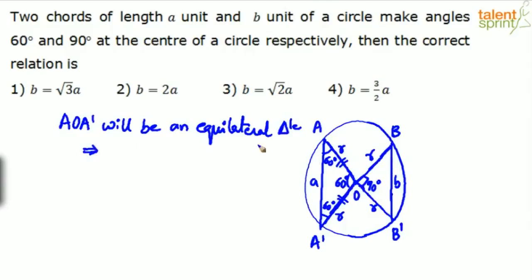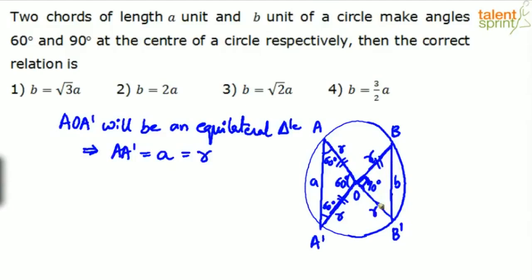Now focus on triangle BOB'. The same argument applies: OB = OB' = r, so two sides are equal. One angle is 90°, and the remaining two angles must sum to 90°. Since the triangle is isosceles, these two base angles are equal, so each is 45 degrees.